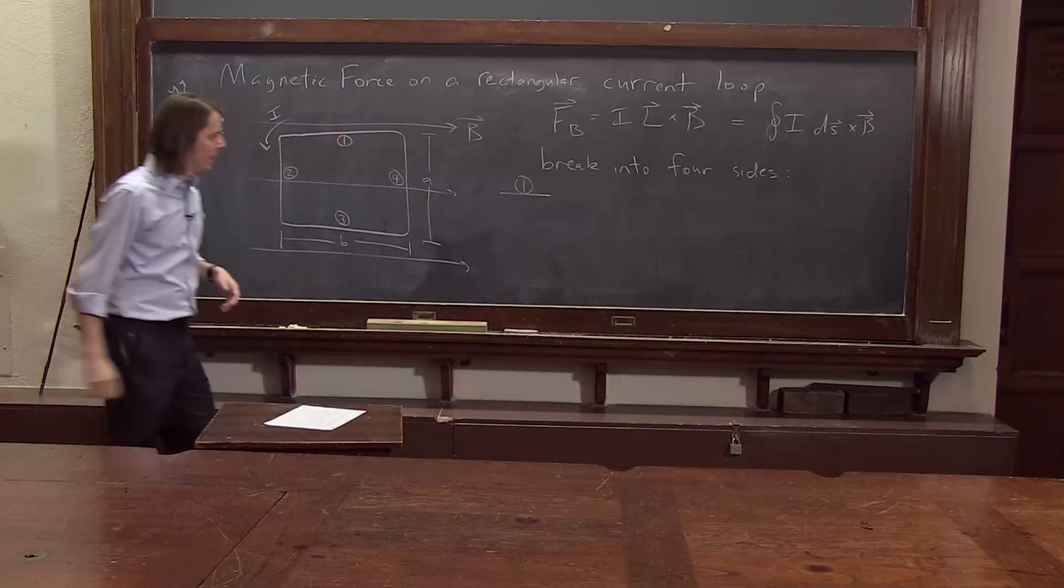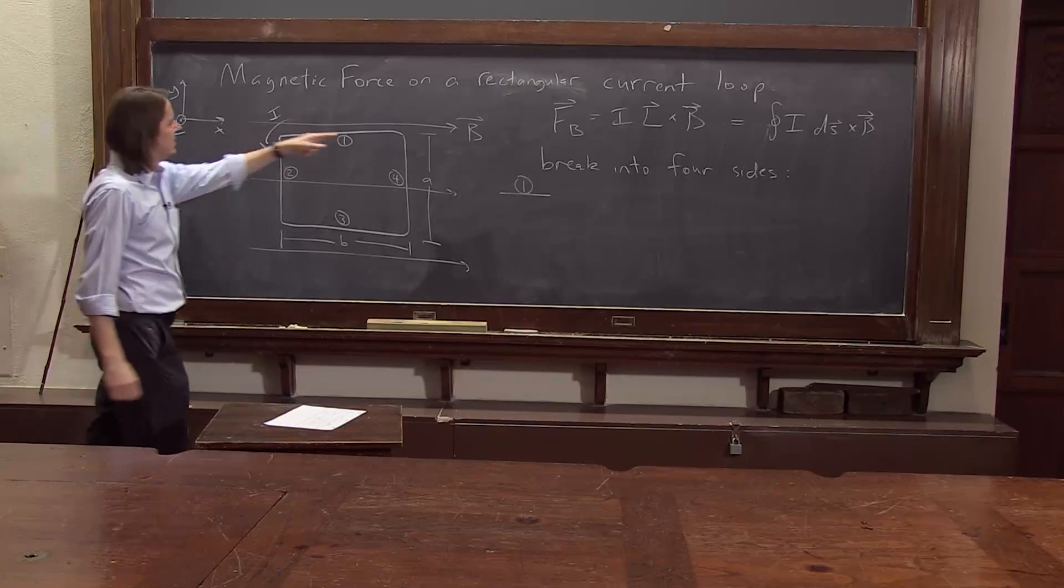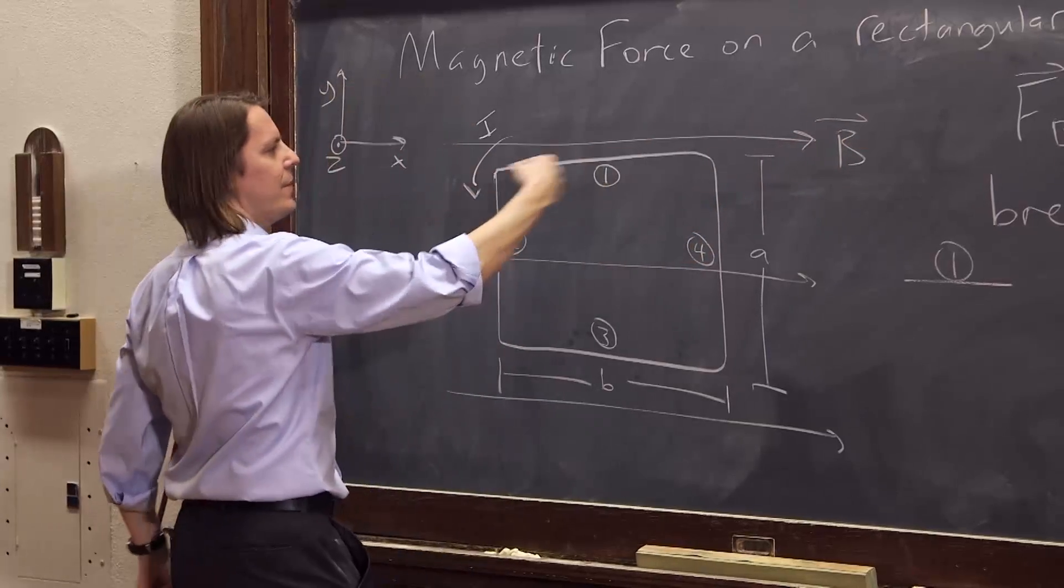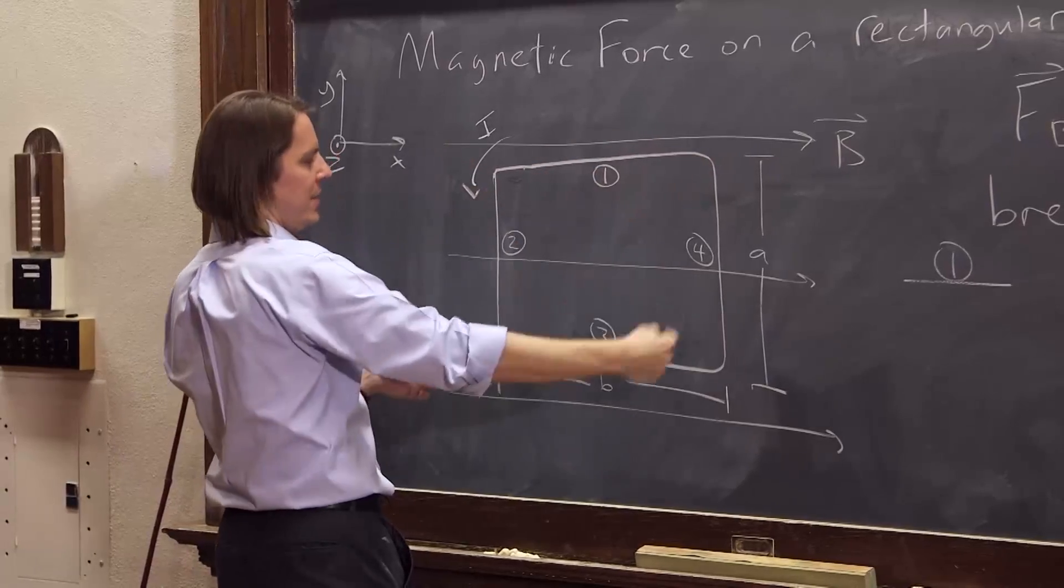Side one. What is the force going to be? So in this case, this is side one. dS is basically this length vector going along here. If you add it all up, the dS's, it's just this length B, a vector of magnitude B, pointing that way.